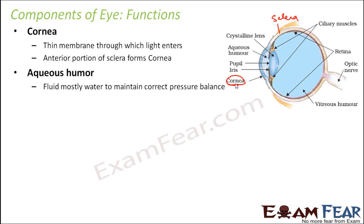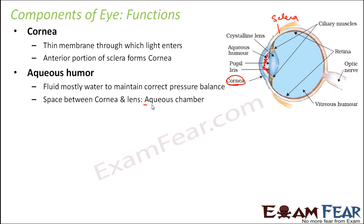Aqueous humor is a fluid, mostly water, that maintains the correct pressure balance. It is the water-like fluid present in the space between the cornea and the lens, known as aqueous humor. This space is known as the aqueous chamber, and the fluid present there is the aqueous humor.